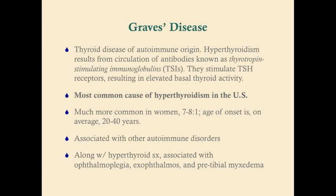Graves' disease typically has onset in the 20s to 40s and, like other autoimmune diseases, is associated with other autoimmune disorders such as rheumatoid arthritis or lupus. Along with hyperthyroid symptoms, Graves' disease is notoriously associated with ocular symptoms — particularly ophthalmoplegia (paralysis or pain moving the eye muscles) and exophthalmos (bulging eyes). It is also associated with pretibial myxedema, an induration and erythema of the skin over the shins.